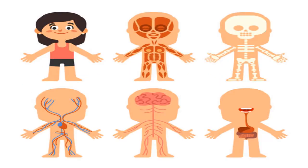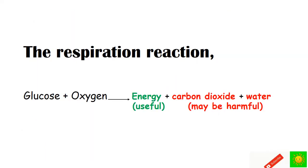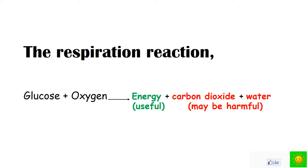The biological processes that take place within the cells produce different products — some useful to the body and some useless. For example, consider the respiration reaction: glucose reacts with oxygen to produce energy, carbon dioxide, and water. Energy is used for biological processes, but carbon dioxide and water may become harmful to cells when there is an excess amount.